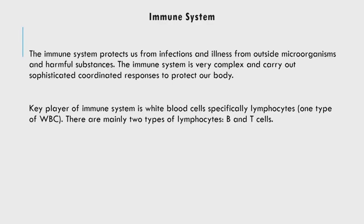Before we understand how stress impacts the immune system, let us briefly understand what the immune system is. The immune system basically protects us from infections and illness from outside microorganisms — it is the body's defense mechanism. It protects the body from microorganisms and harmful substances that enter our body. The immune system is very complex, particularly in the human body, and is a very sophisticated and coordinated system. Key players in the immune system are white blood cells.